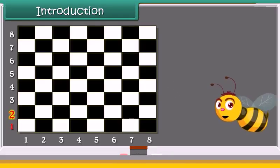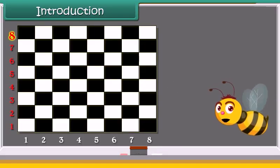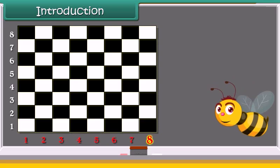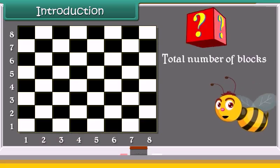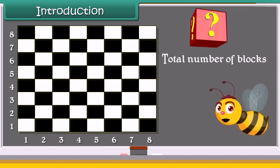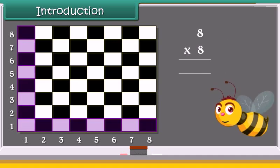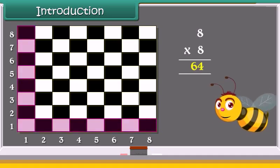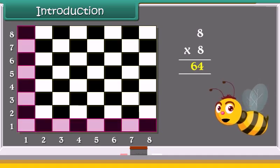A chess board has 8 rows and 8 columns. Can you tell the total number of blocks in the board? Yes, we can calculate by multiplying both the numbers. Let's study about multiplication.